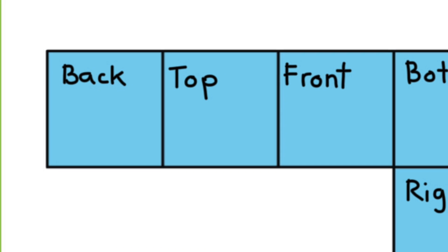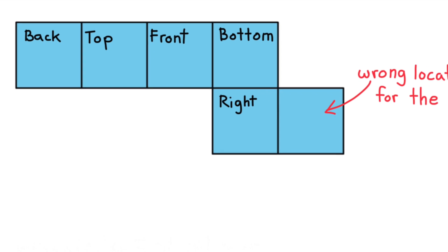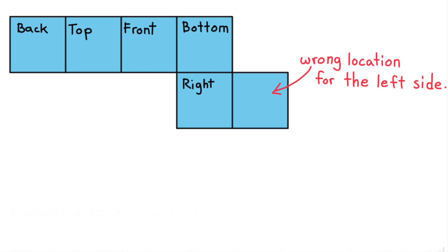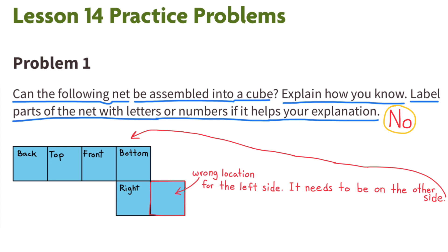I labeled the sections the back, the top, the front, the bottom, and the right. But this last section here is in the wrong location to be the left side. It needs to be located on the other side for this net to assemble into a cube. So no, this net cannot be assembled into a cube.